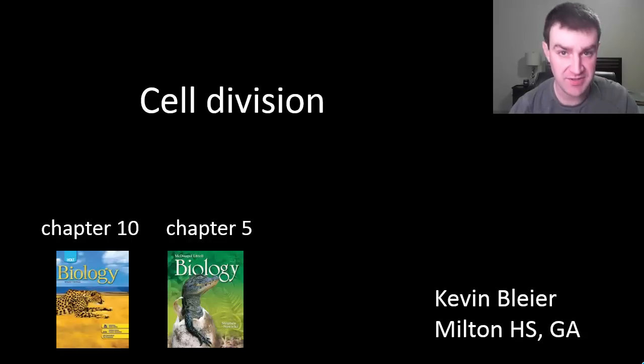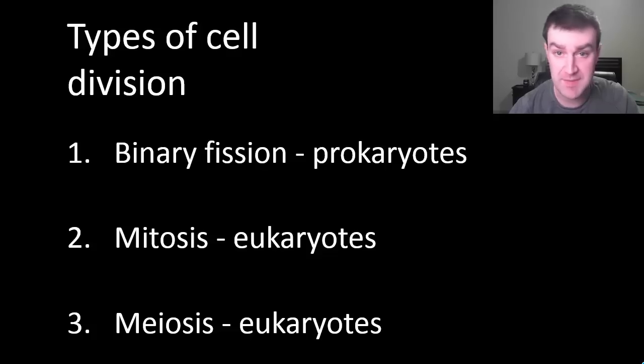In this video I'm going to talk about cell division. There are really three types of cell division in nature. There is binary fission in prokaryotic bacteria, and there's two types of cell division in eukaryotes, mitosis and meiosis.